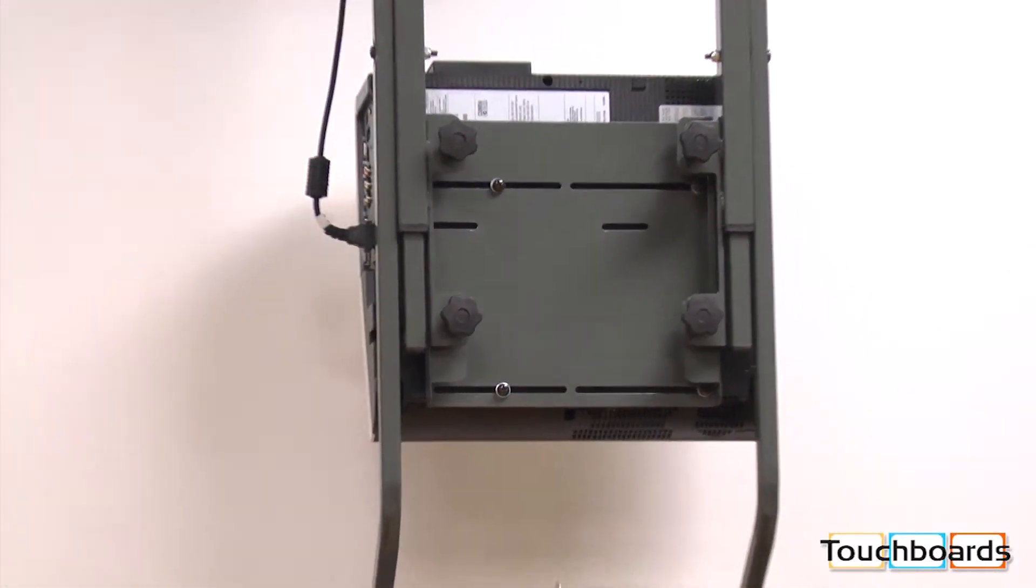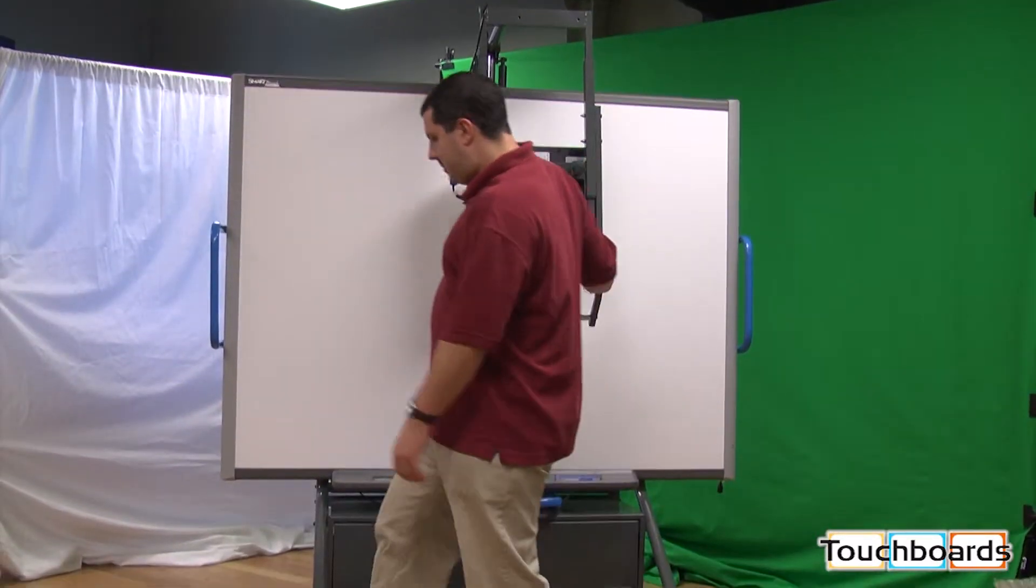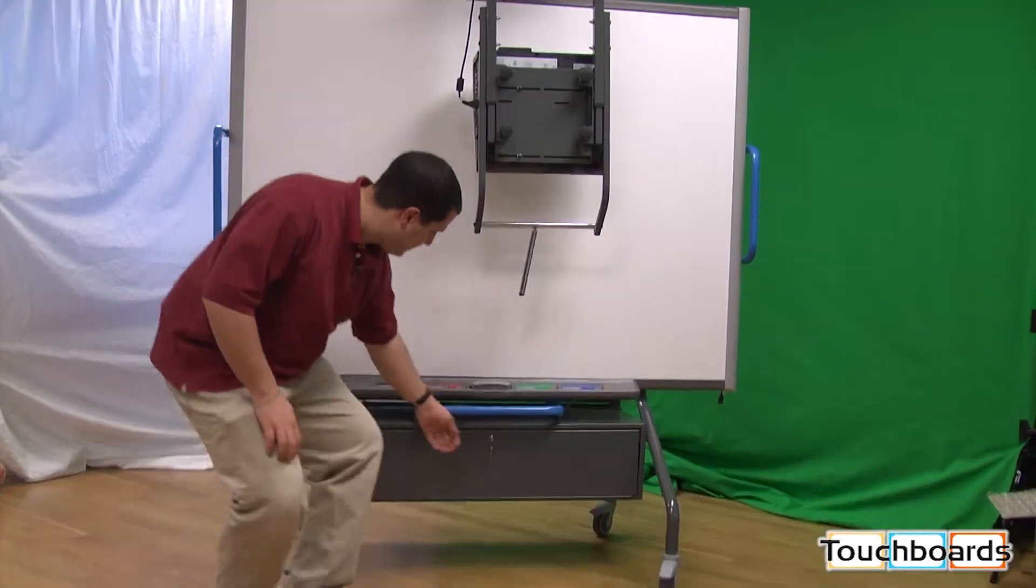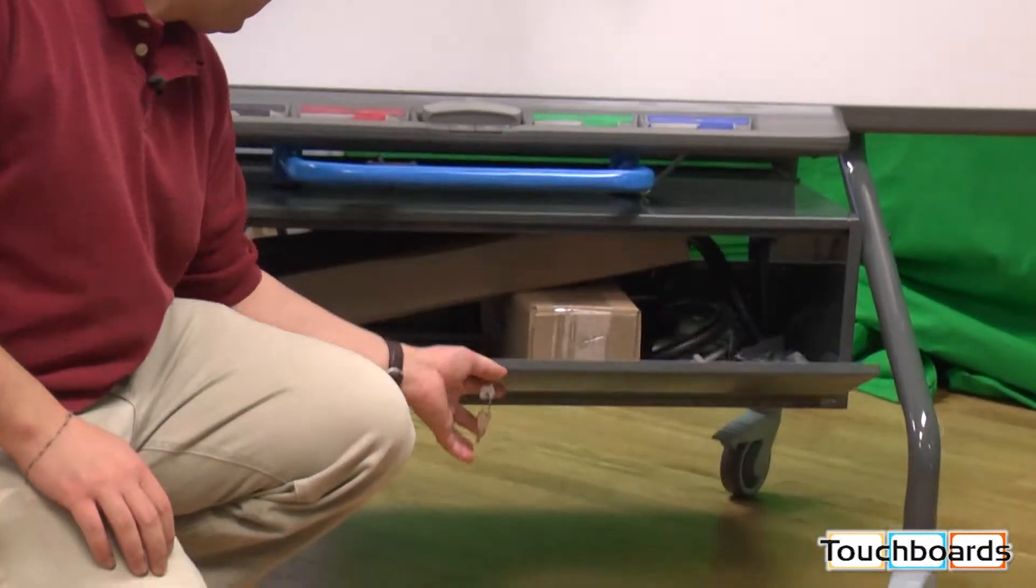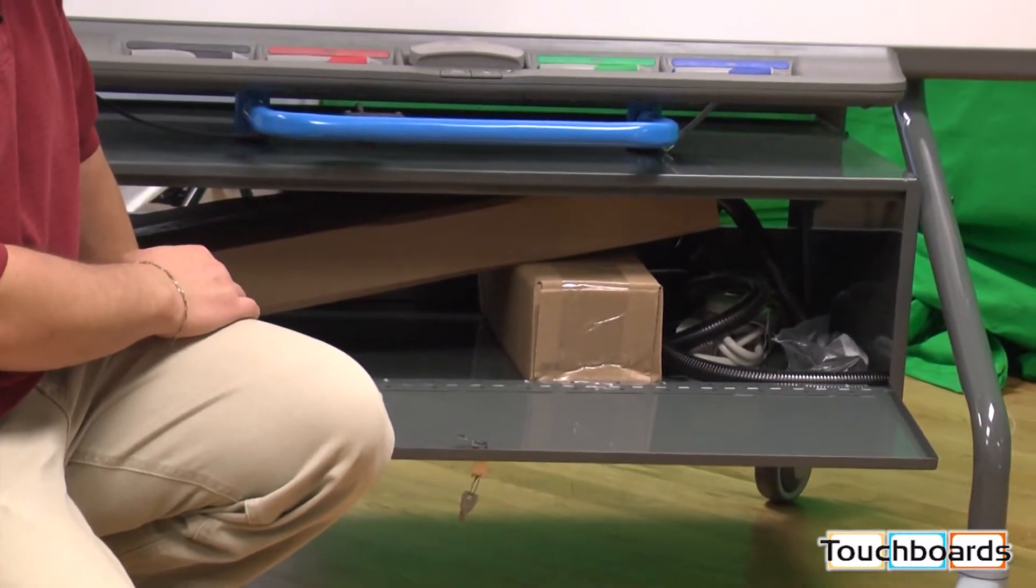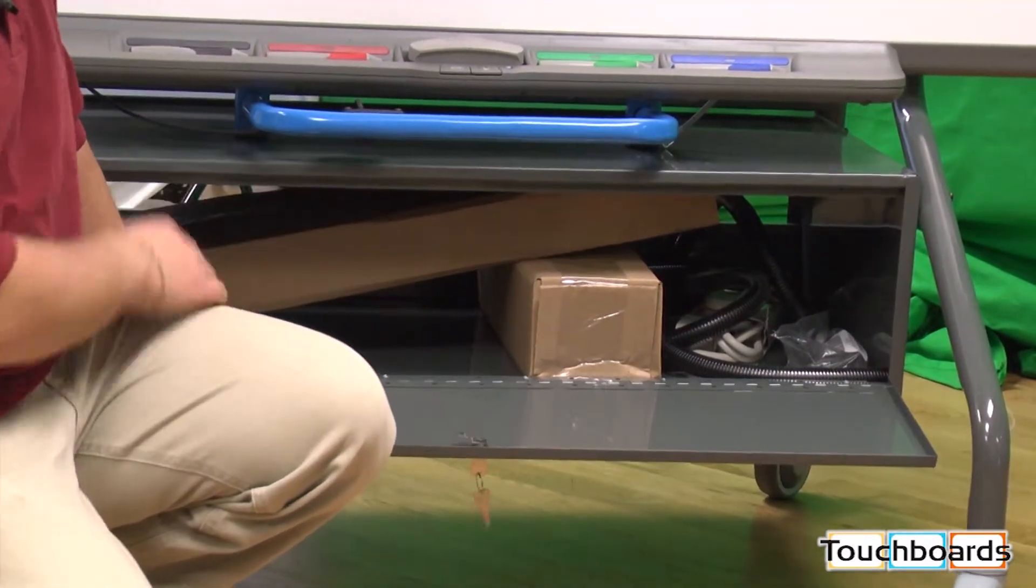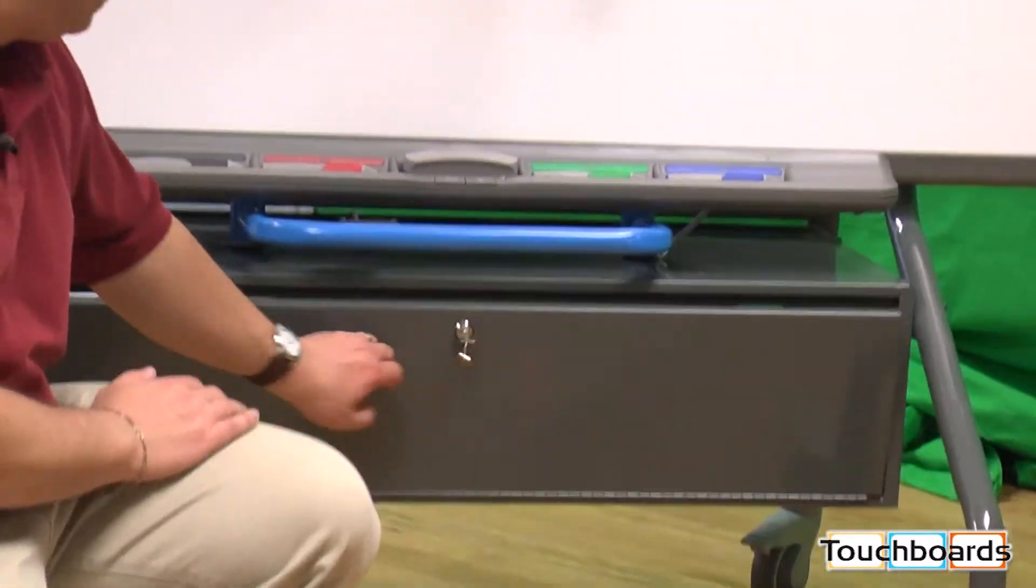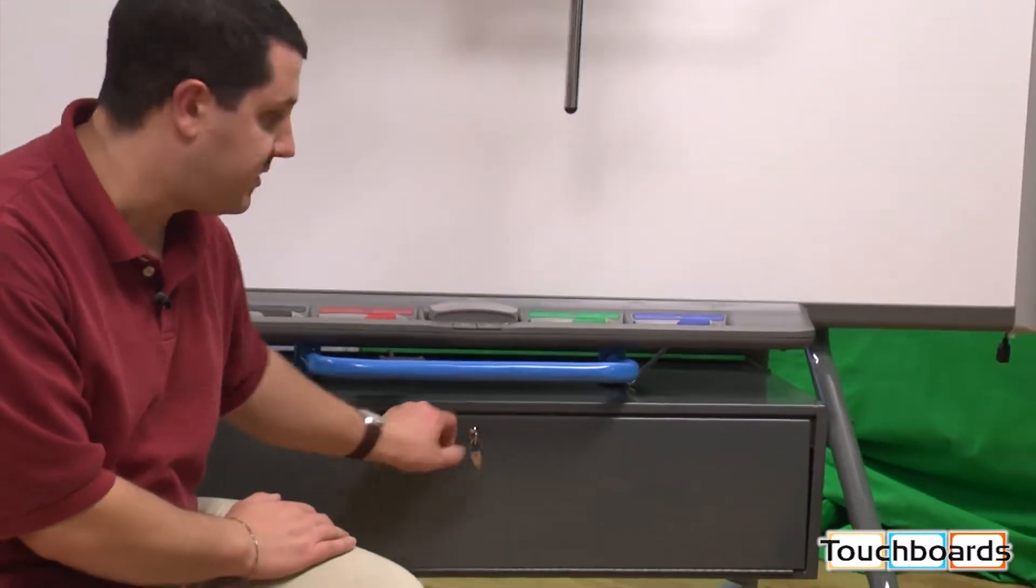In addition to the locks on all four wheels, this stand has a locking cabinet down at the bottom. As you can see, it's got nice storage. You can put anything you want, response system, if you had a smaller document camera, you can shove it in there and you can set it up when you're using your board. This does lock, keeps everything secure.